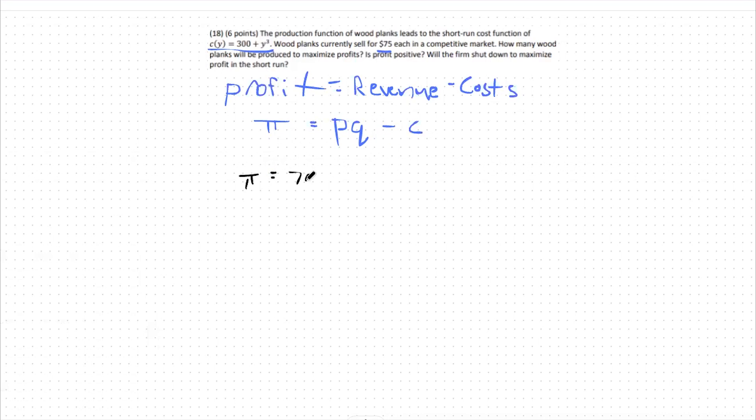So in this case, profit will be equal to the price at which I can sell my goods for, which is 75. We're going to change q to y just to be consistent with what our cost function uses. So 75 times y, and then we're going to subtract out this cost function: 75 times y minus 300 plus y cubed. So just to expand out that negative sign, we're going to say profit is equal to 75y minus 300 minus y cubed.